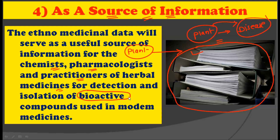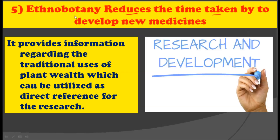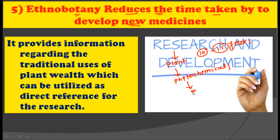Once we know which plant is used for a particular disease, we can extract its bioactive compounds. The information present in ethnobotany is therefore a great source for producing new bioactive compounds. The next application of ethnobotany is that it reduces the time taken to develop new medicines. Research to develop a new drug typically requires nearly 10 to 15 years, during which a plant is selected, all phytochemicals are extracted, and bioactive compounds are identified.